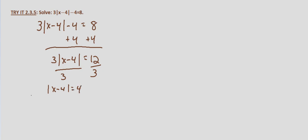This is when we split it into two equations. x minus 4 equals the negative of what the absolute value equals. So x minus 4 equals negative 4, or x minus 4 equals 4. Solving these, if we add 4 to both sides, we get x equals 0 or x equals 8.